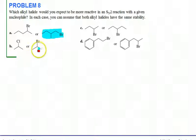For B, bromine is a weaker base, therefore a better leaving group, so it would be more reactive.